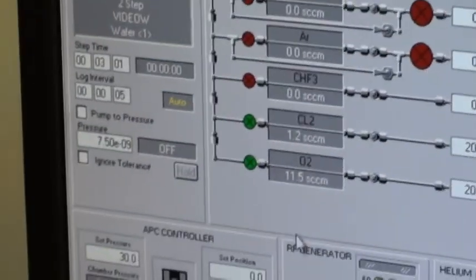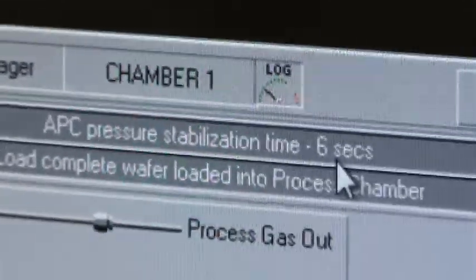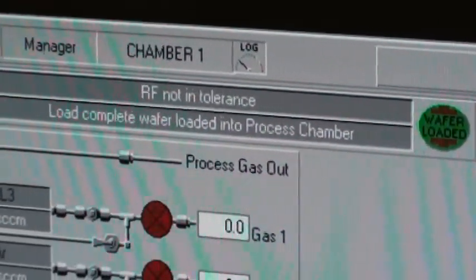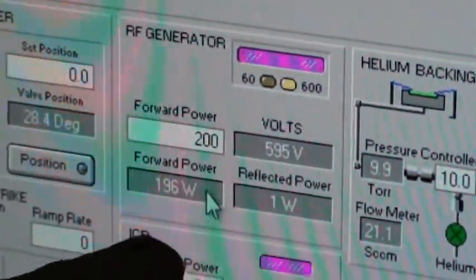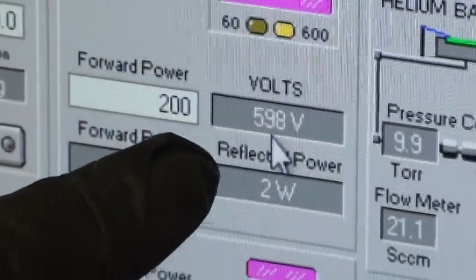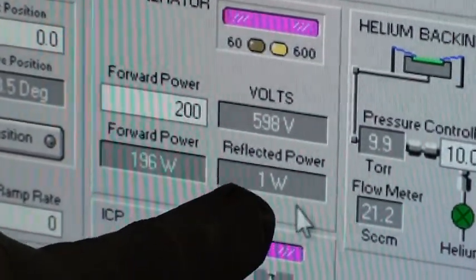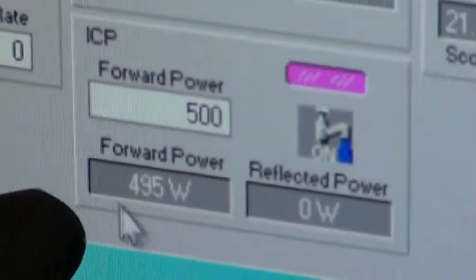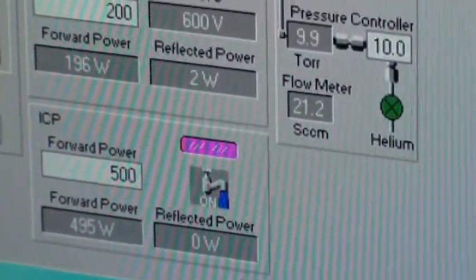Now we're going into the next step. Now it automatically gives it a 6 second timeout, waiting for the pressure control again, because it shuts everything off, turns everything on whenever it skips step to step. Okay now our RF just turned on. 596 volts DC bias. I asked for 200 watts. I have 196, which is very good. We're within 1%. 2 watts reflected. That's the lower. It's the platen power. ICP power. I asked for 500 watts. We have 490, 500, 495. Zero watts reflected. That's very good. Well within spec.